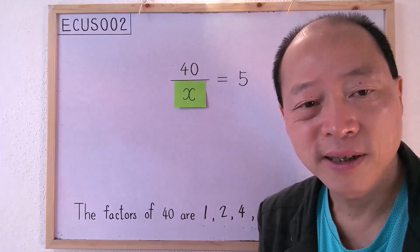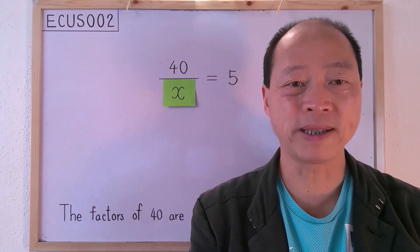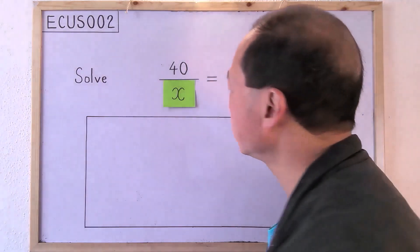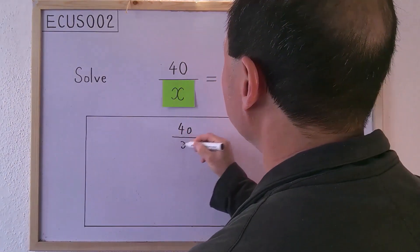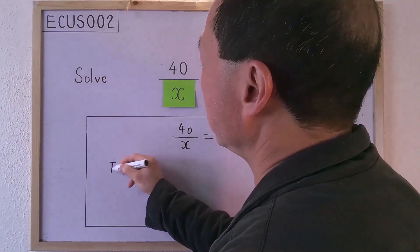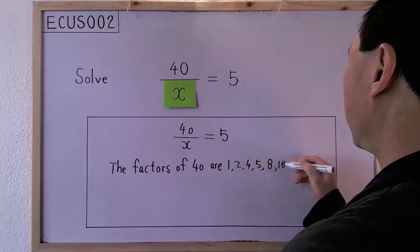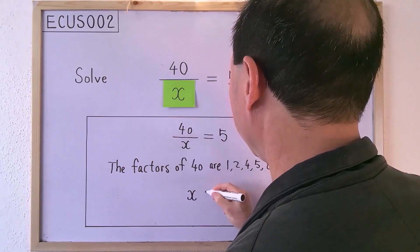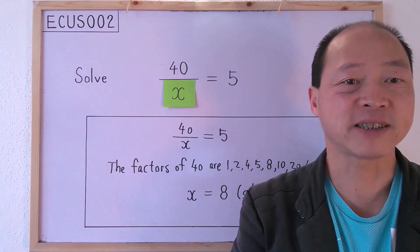Which of them fits the equation? Obviously, it is 8. 40 divided by 8 is 5. The next question is how should we present the working steps if we work out the answer this way? I suggest we write out the working steps like this: first, we copy the equation to solve. Personally, I call this method the factor selection method. However, you may find it tedious to list out all the factors to find the answer.